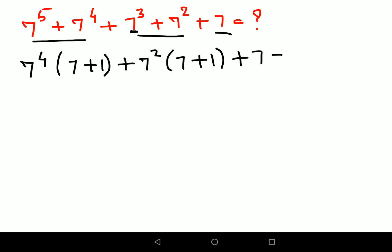Now here what do we get? See this 7 plus 1 bracket comes out to be 7 raised to 4 into 8 plus 7 square into 8 plus 7.